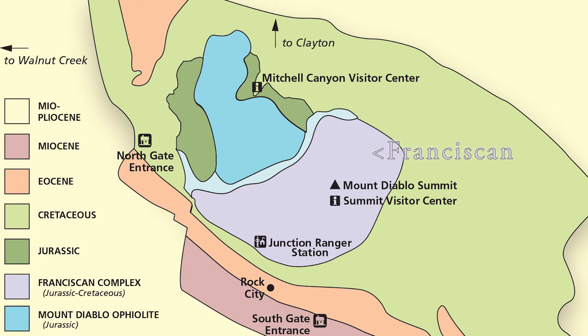One of the things that makes Mount Diablo so difficult, even today, for geologists and laypeople to understand, is we've got two bedrocks here. One is the Franciscan, which came in from the west. But the other, to the north, is called the Coast Range Ophiolite — ophiolite meaning an ocean floor that's now on land. And onto that old ocean floor washed material from the Sierra Nevada Mountains: sand and silt, to great depths, miles and miles. That's called the Great Valley Sequence.